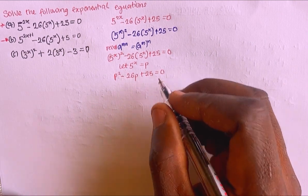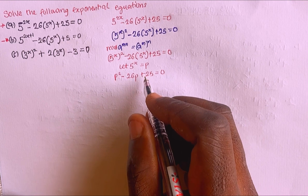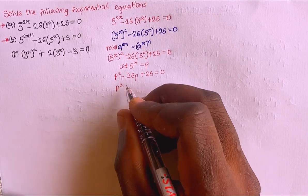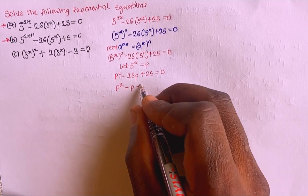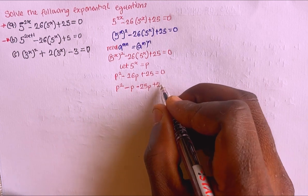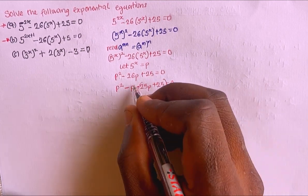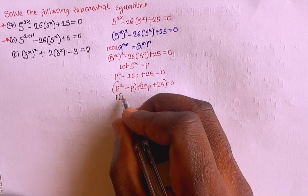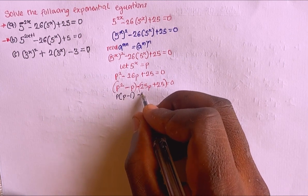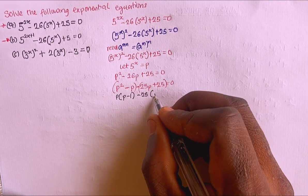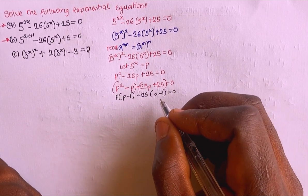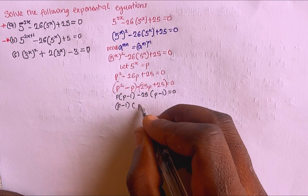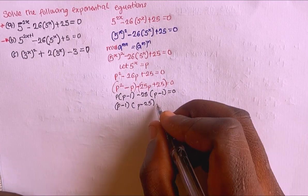This is a quadratic equation, so I'm going to factorize it. Factorizing: p² minus p minus 25p plus 25 equals 0. I can group this as p(p minus 1) minus 25(p minus 1) equals 0, giving (p minus 1)(p minus 25) equals 0.